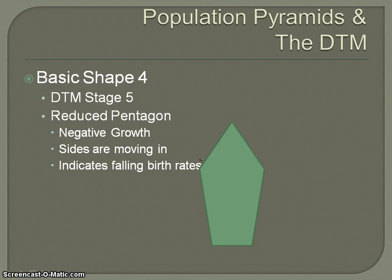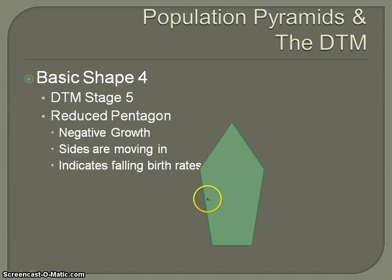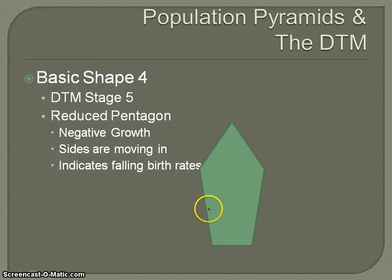Basic shape number four is related to demographic transition model stage five and is characterized by negative growth. The sides are beginning to move inward and downward, meaning people are not replacing themselves — they're having fewer than 2.1 children per woman. Birth rates are declining, so naturally over time the population will decline. There may be some slight population growth from the older bubble, but once that falls off, the size of the pyramid and the population will continue to decline because people are not having enough children.